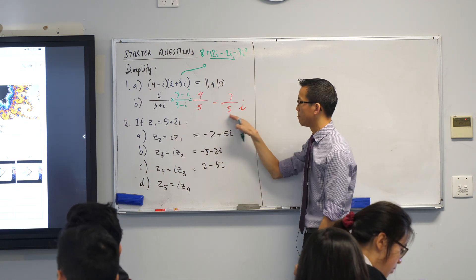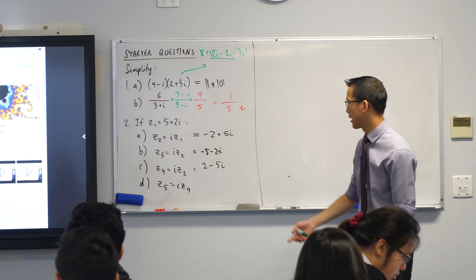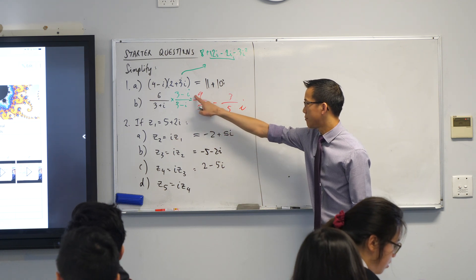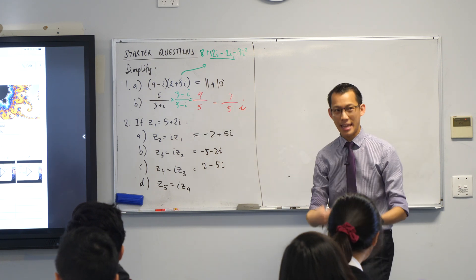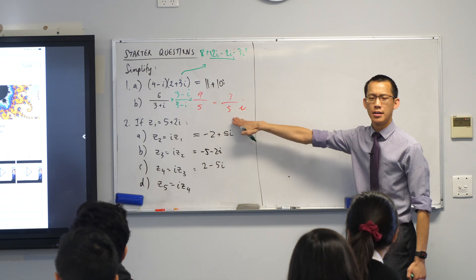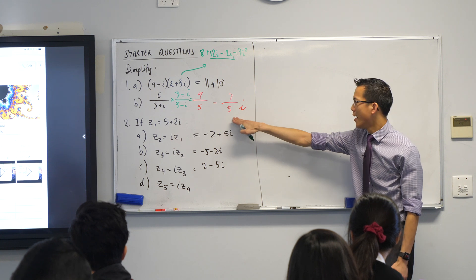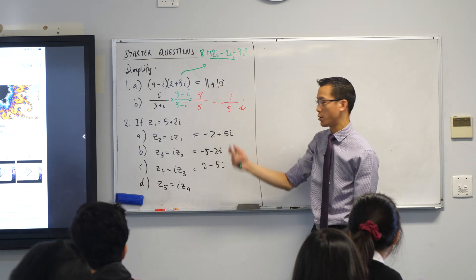By the way, whoever wrote this solution, great job. One of the things that you might have been wanting to do at the beginning is just leave it as 9 minus 3i divided by 5. And that's the correct answer, by the way. I should point out. However, we tend to want to write these as the real part completely separate to the imaginary part. So this is, even though you've got the same denominator there, the customary way we would write this. So thumbs up.